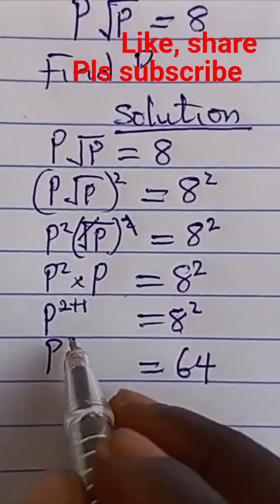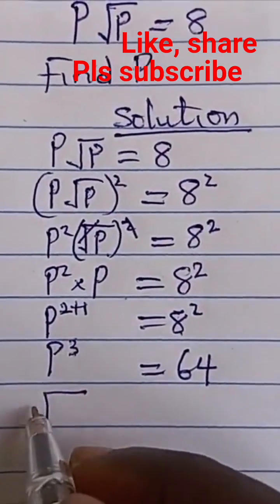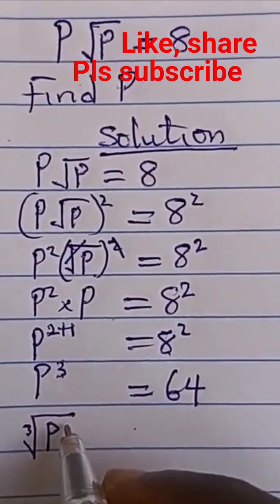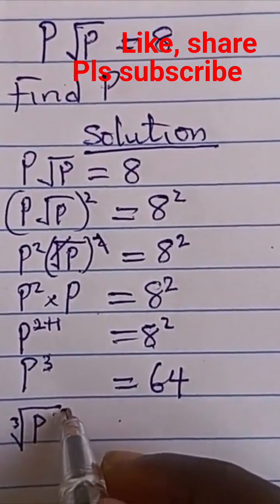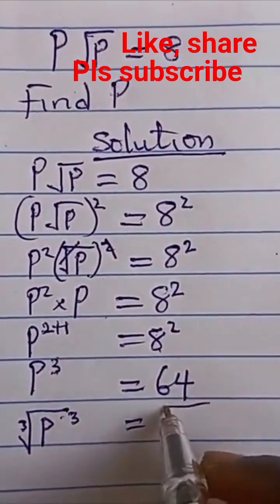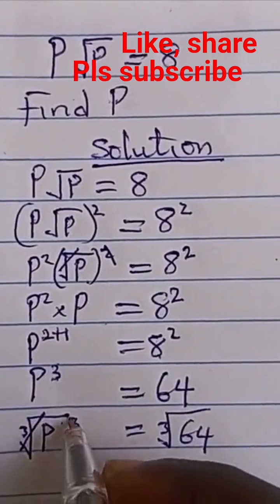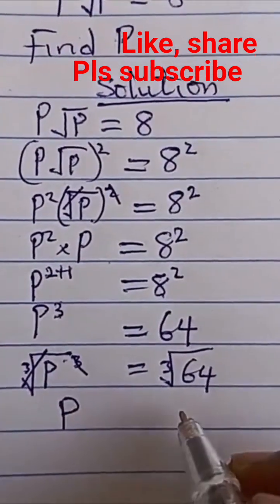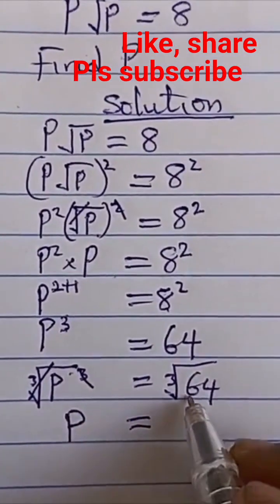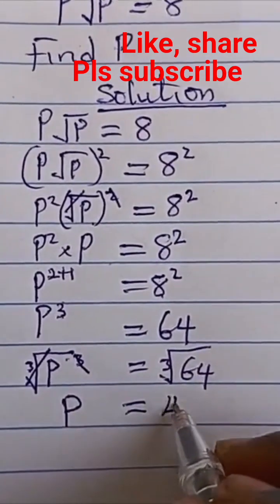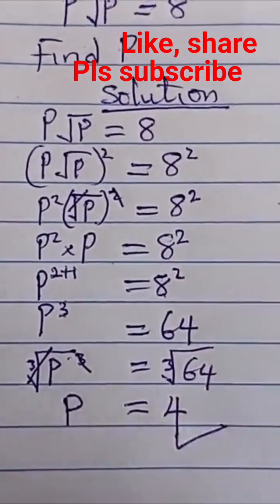8² equals 64, so we have P³ = 64. We find the cube root of both sides: ³√P³ = ³√64. The cube root and cube cancel, giving us P = 4. The cube root of 64 is 4, so that's the final answer.